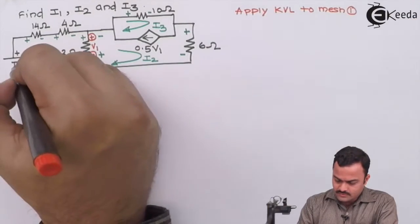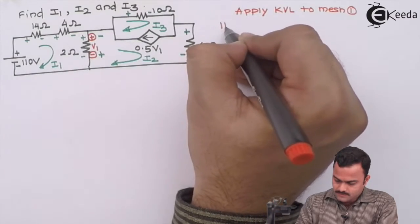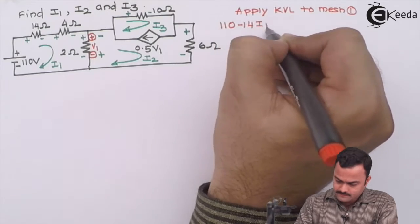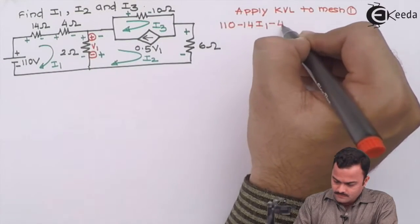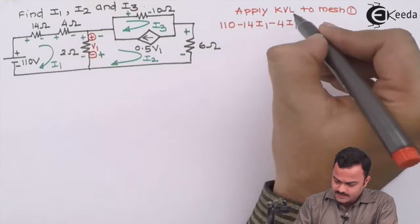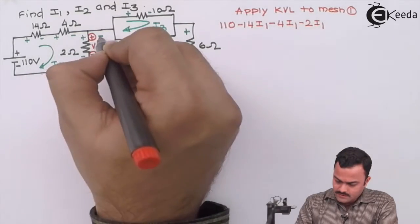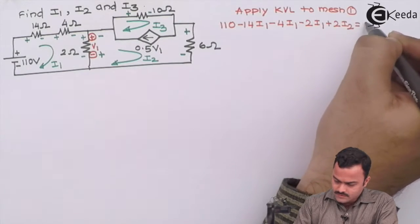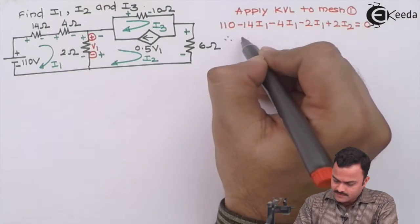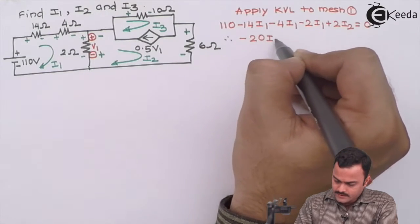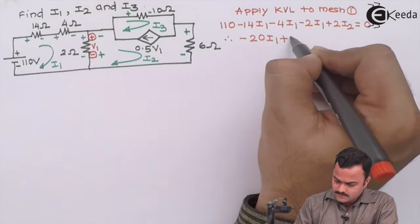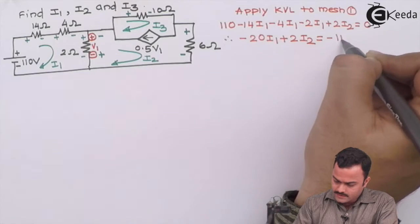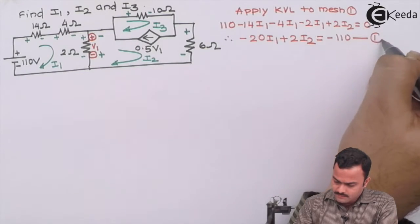Starting from the voltage source: plus 110, then minus 14i1, minus 4i1, minus 4i1, minus 2i1, plus 2i2 equals zero. After simplifying, we get: minus 20i1 plus 2i2 equals minus 110, as equation number 1.